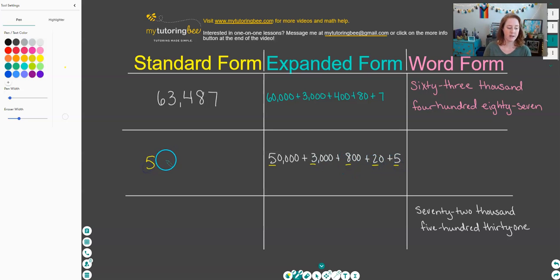So if I have 50,000 plus 3,000, then I know those two are going to go in the 10,000 and 1,000 spots. And then 800—the eight goes in the hundreds place. 20 tells me that the two goes in the tens place, and the five ones tells me that the five goes in the ones place.